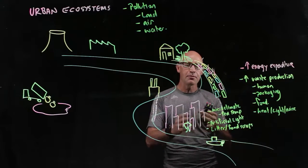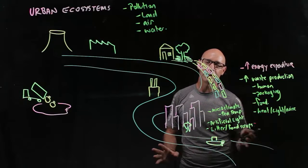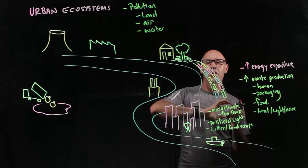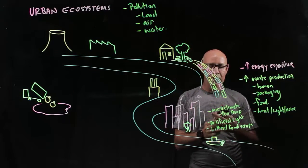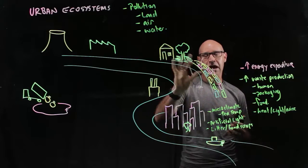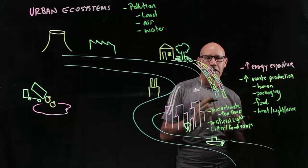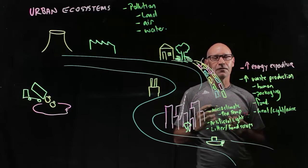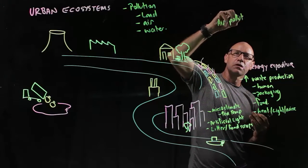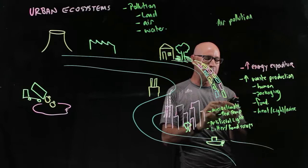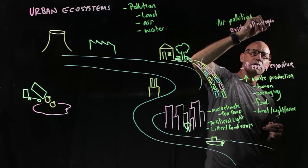Now people need to move around the city, getting to and from the city to the suburbs. And they often do that on roads, using cars, buses, trucks. So these vehicles that are combusting fossil fuels are injecting into the atmosphere large amounts of pollution, of air pollution. And those pollutants are oxides of nitrogen and sulfur.